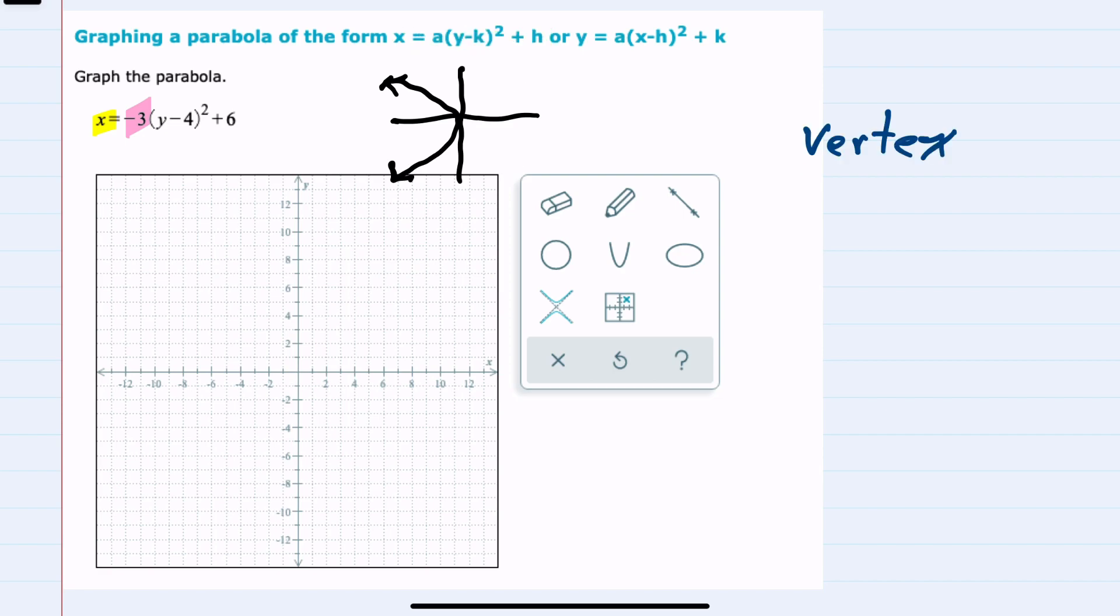To start, I would like to find my vertex, which I know will be the point h, k. And we can see from our form that h is the part being added to the end. So here my h is 6. k is the part being subtracted from y. So we have to be careful with our signs, but it is a 4 that's being subtracted from y. So my k is 4. We found the vertex, 6, 4. So we'll start with that.